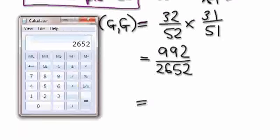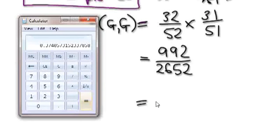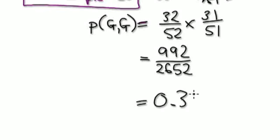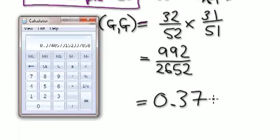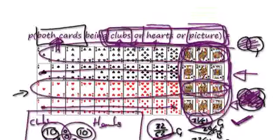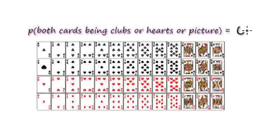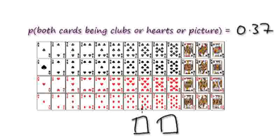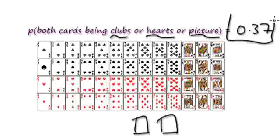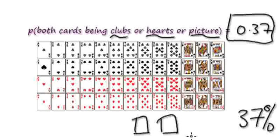Let's convert it to a decimal: 992 divided by 2652 equals approximately 0.37. So the probability of this would be 0.37. If you were to pick out two cards at random, the probability of getting both cards being clubs, hearts, or picture would be 0.37, or roughly 37%.